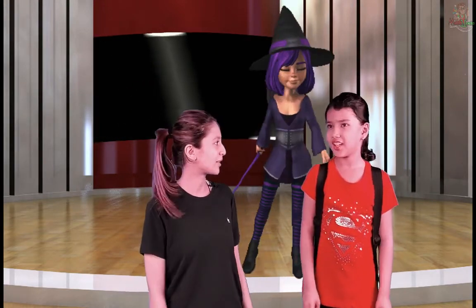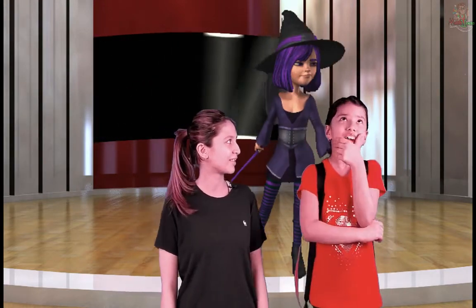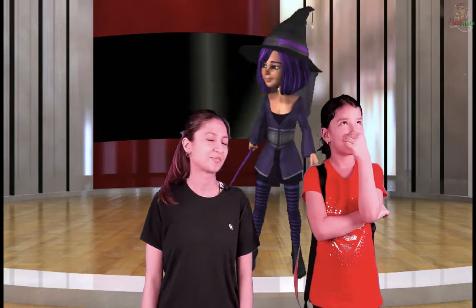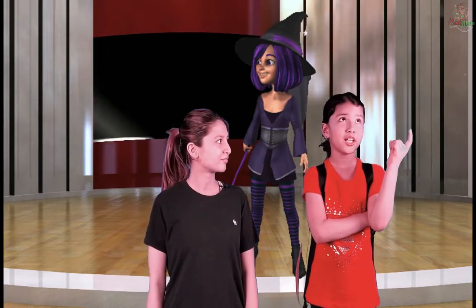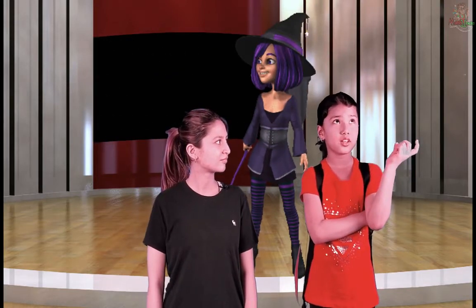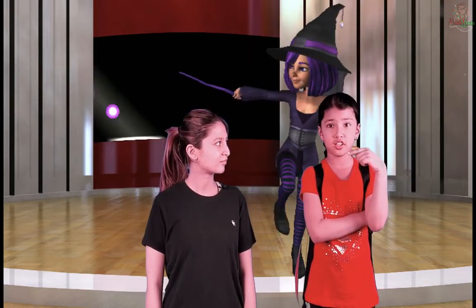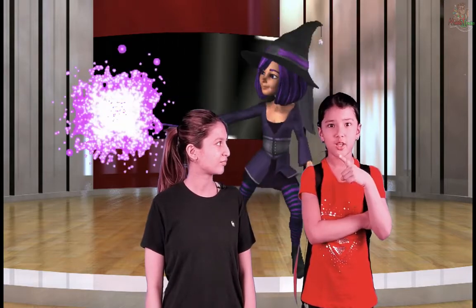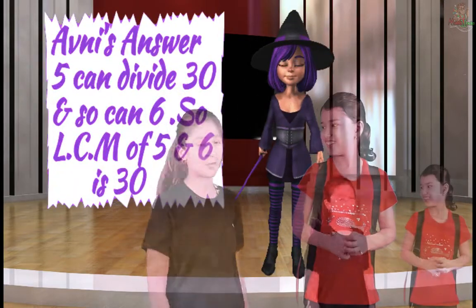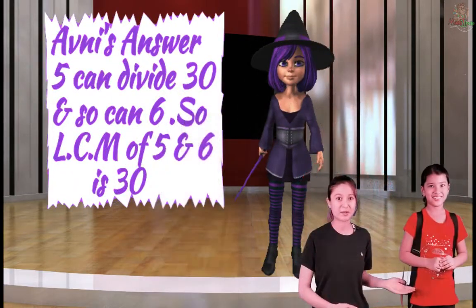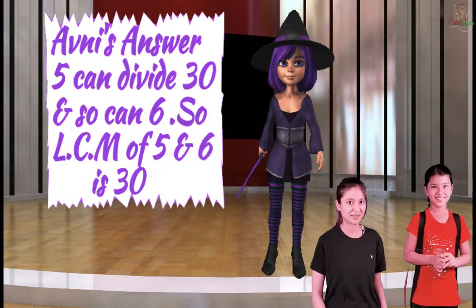Yes. So tell us. So 5 and 6 — 5 can be divided by 30, and 6 can be divided by 30, so it's 30. Yes, you're right! Wow, Avni didn't know. I didn't know his age.